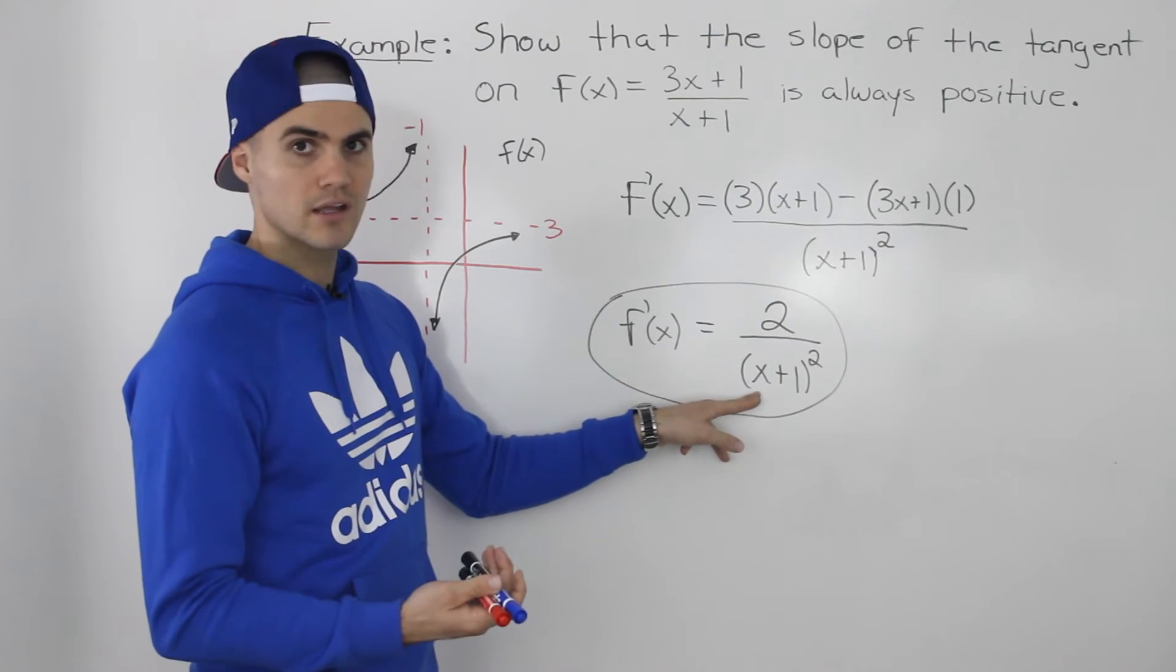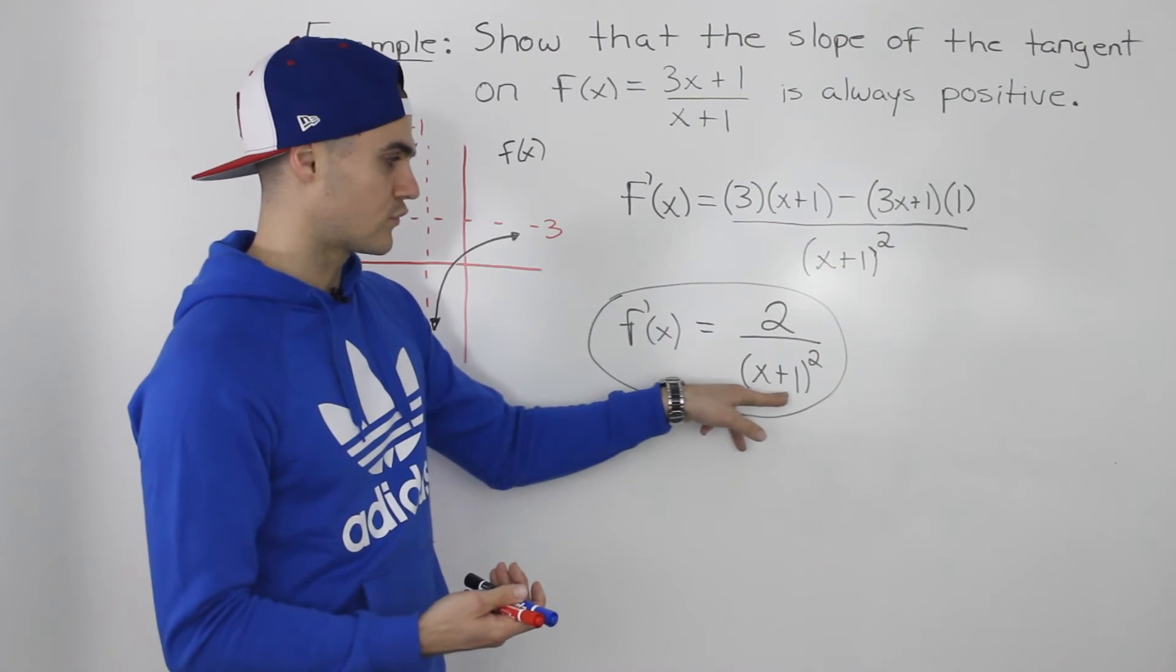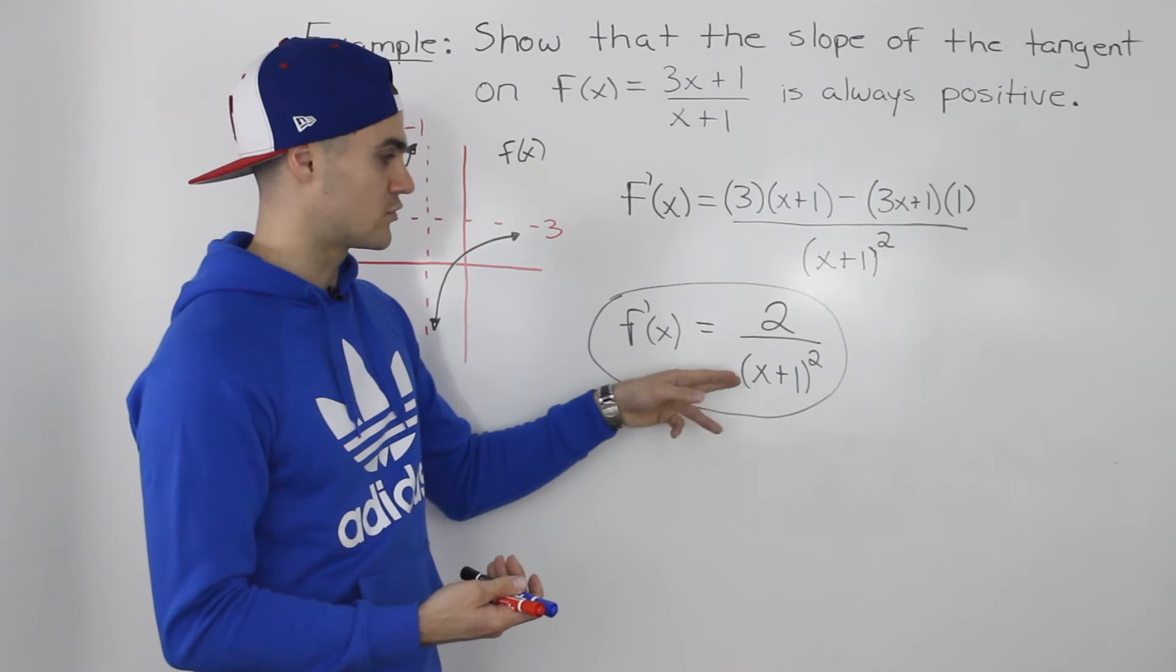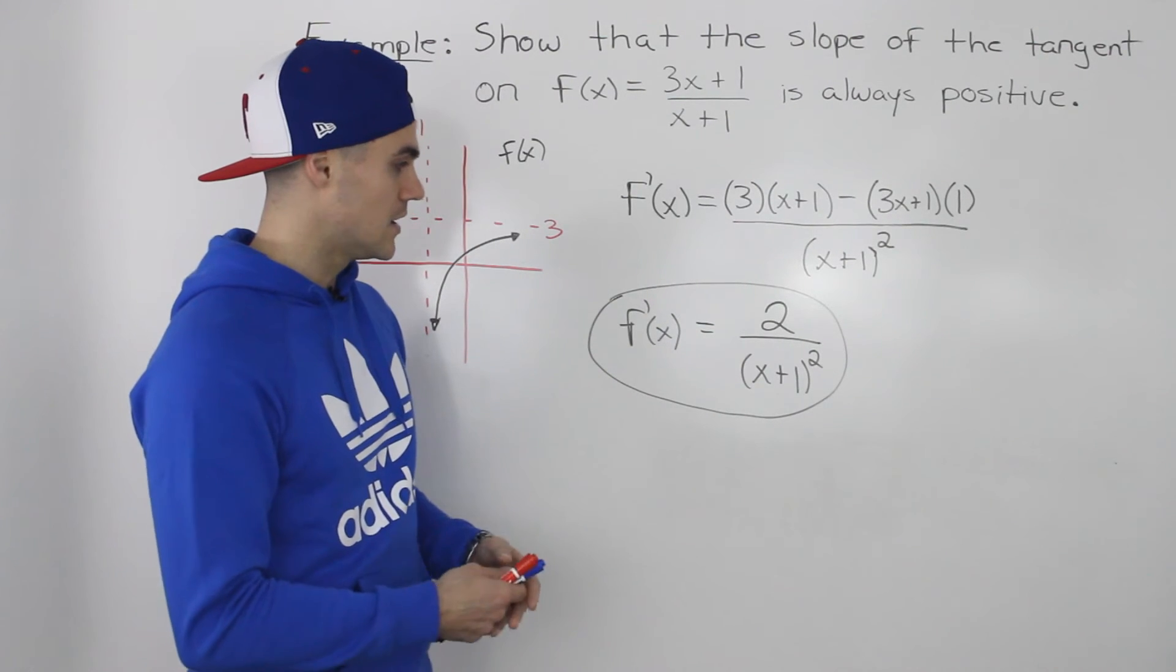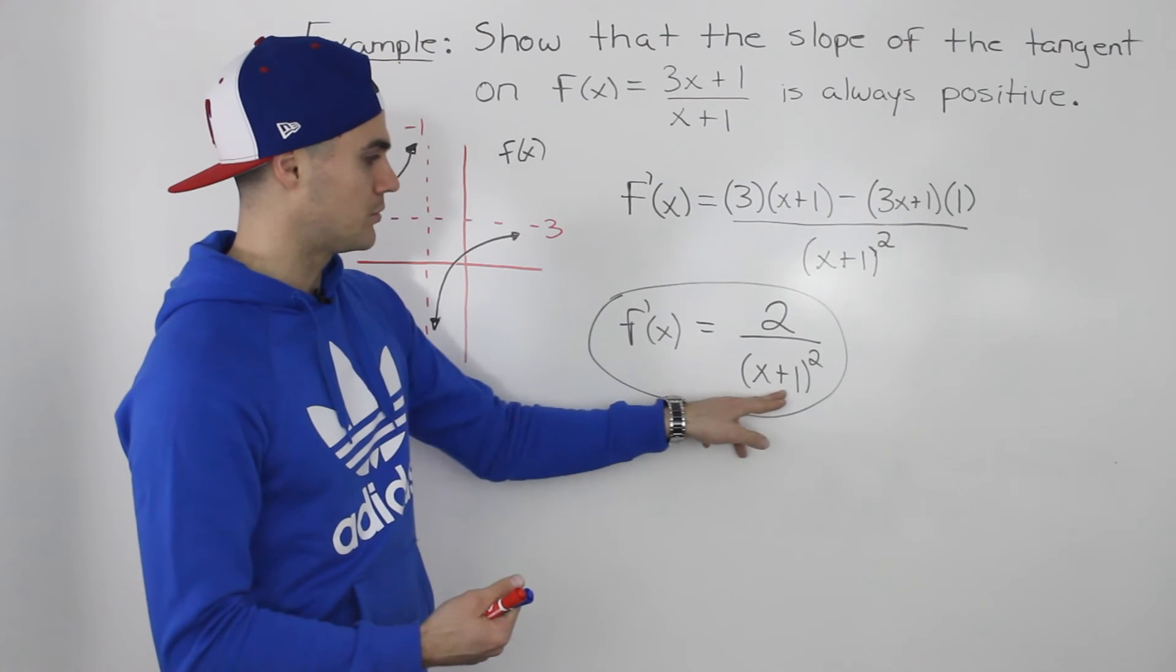So no matter what x values you plug in here, for example, if you plug in 3, you would have 2 over 4 squared, which is 2 over 16, which is 1/8. That's positive,